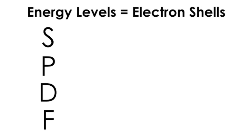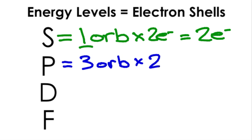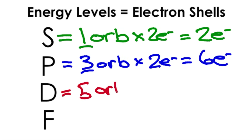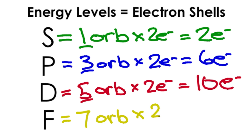The higher energy level electron shells tend to have more than one subshell. The S subshell has one orbital, and only two electrons can fit in any orbital, so 1 times 2 equals 2 total electrons. The P subshell has three orbitals, so 2 times 3 equals 6 total electrons. The D subshell has five orbitals, so 2 times 5 equals 10 total electrons. The F subshell has seven orbitals, so 2 times 7 equals 14 total electrons.